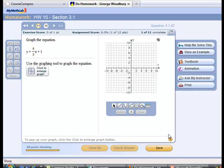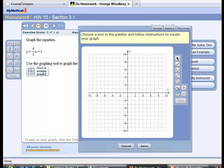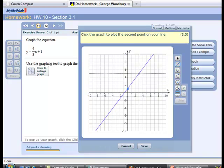Here's the equation again, y equals 4 thirds x plus 1. I'm going to begin by enlarging the graph and plotting my points using the line tool at 0, 1, and 3, 5.